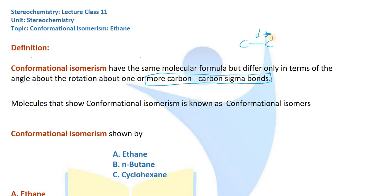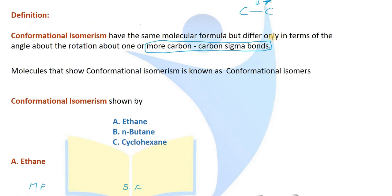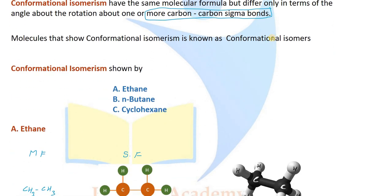I will explain three examples of conformational isomerism: ethane, n-butane, and cyclohexane.